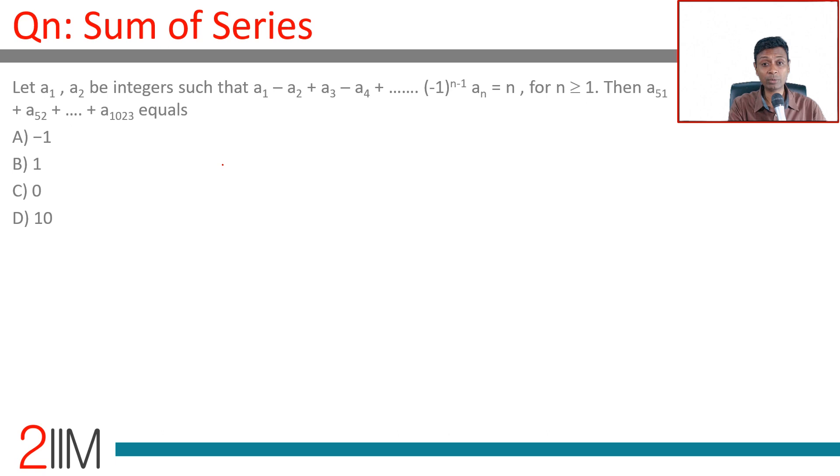Let a1, a2 be integers such that a1 - a2 + a3 - a4 + ... + an = n for n ≥ 1. These kinds of questions become wonderful. Say a1 = 1, a1 minus a2...